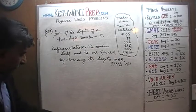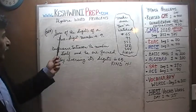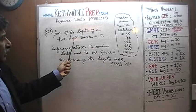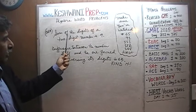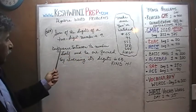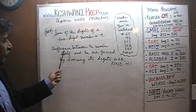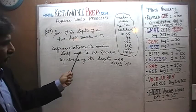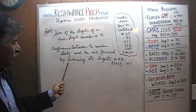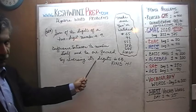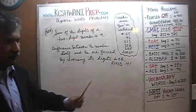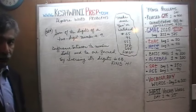Let's take a look at it. It says: the sum of the digits of a two-digit number is nine. The difference between the number itself and the one that you form by reversing the digits is sixty-three. The question is: what is that number?